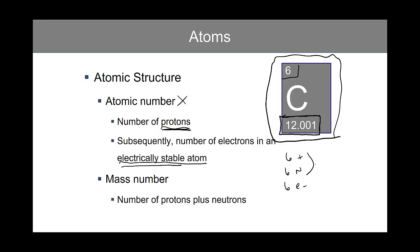You might ask yourself, six protons plus six neutrons is 12, not 12.001. And this is where isotopes come into play.